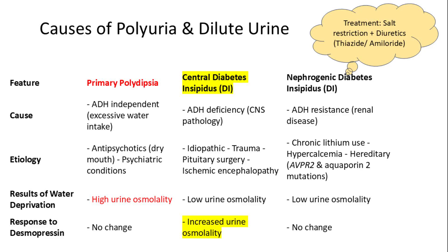Then we check response to desmopressin, which is present in central diabetes insipidus. Nephrogenic DI can be caused by lithium and is treated with salt restriction and diuretics, including amiloride and thiazides.